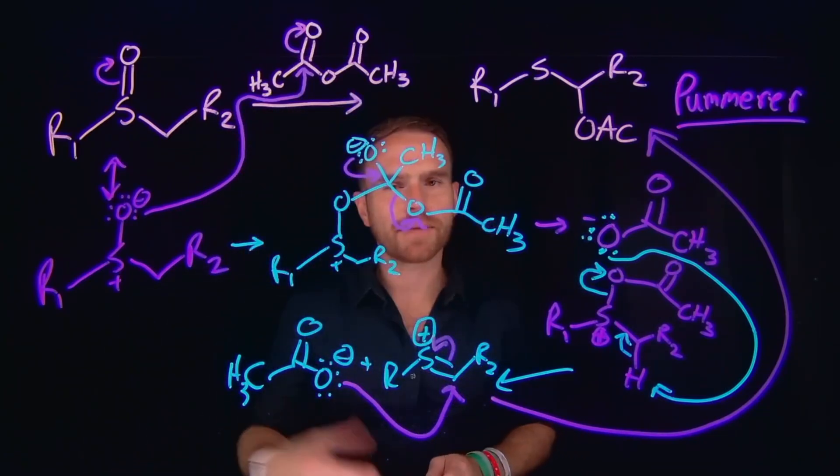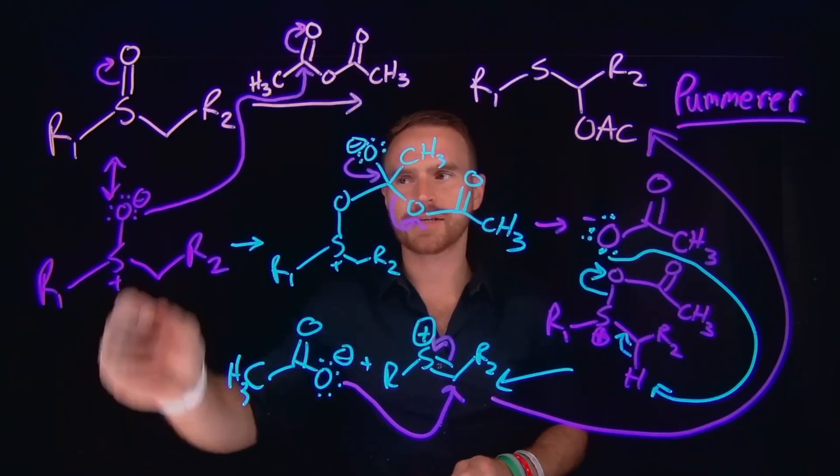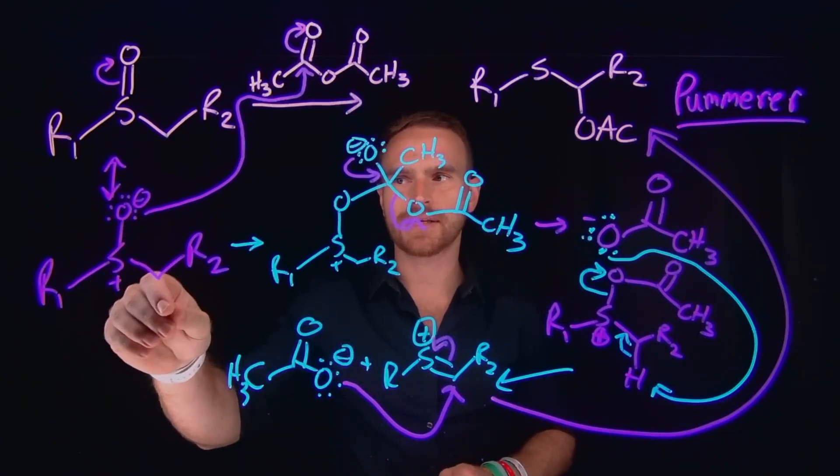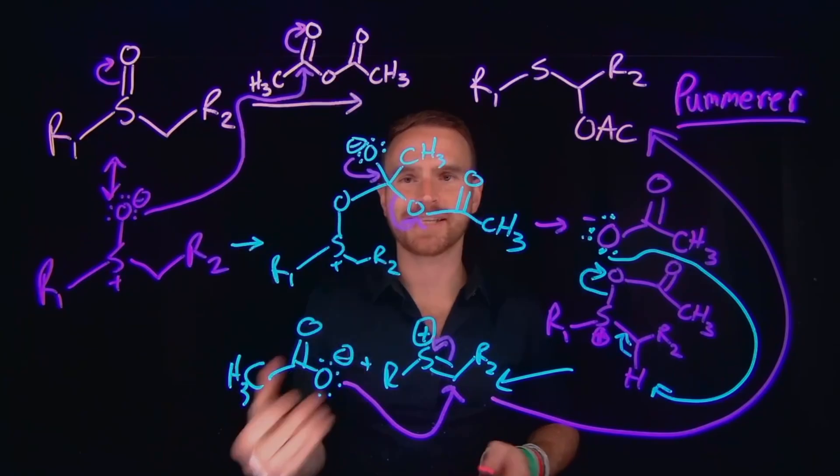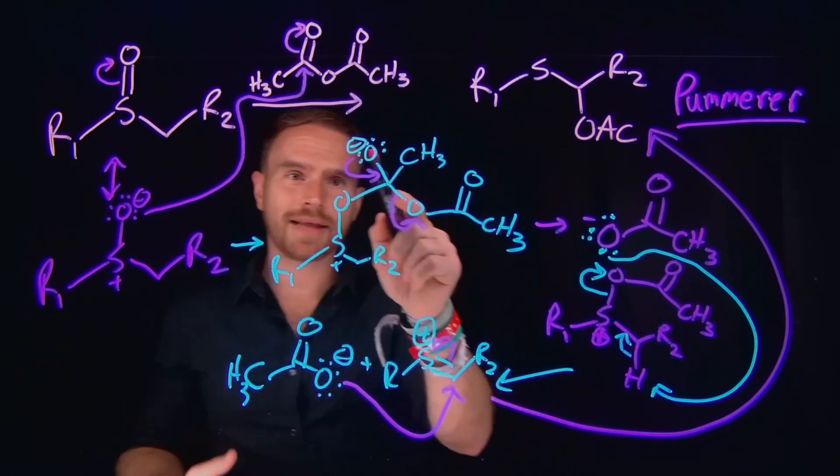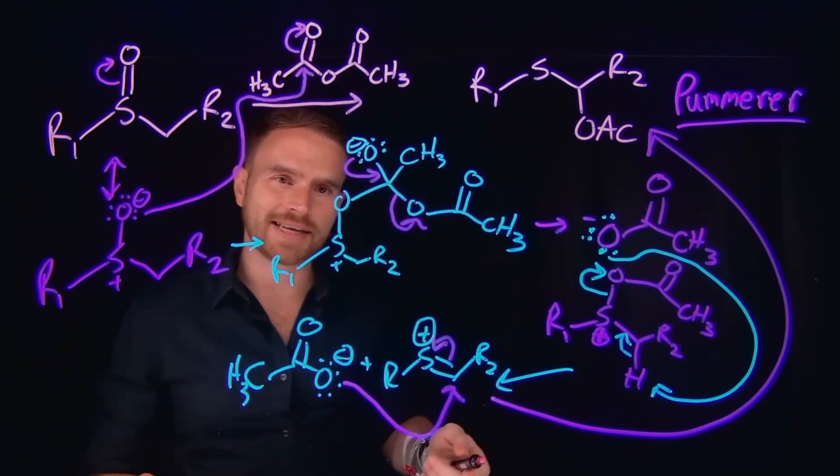So then bringing it all together, we can begin this reaction by visualizing a resonance structure that allows us to see that oxygen is nucleophilic, which will come and attack acetic anhydride. Subsequently, the pi electrons will come down and kick off acetate as a leaving group.